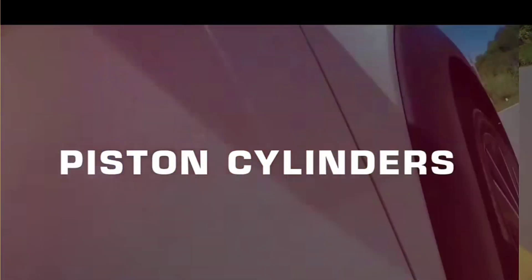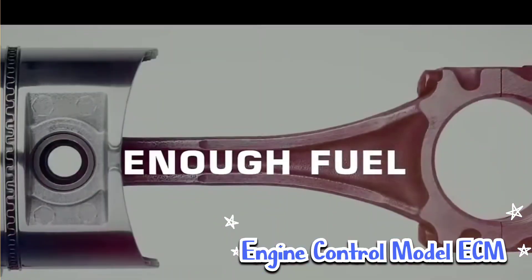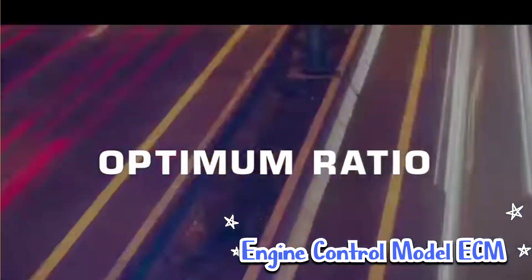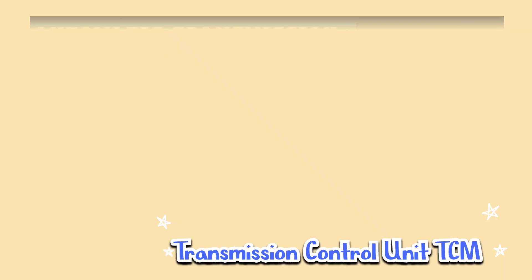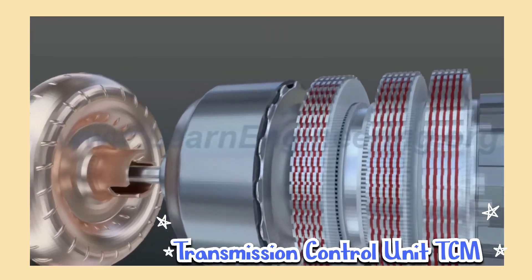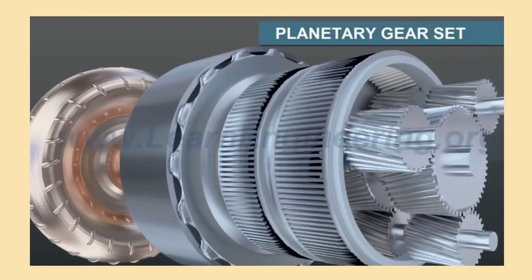Now, not all ECUs are the same. There are several types, each with specific roles. Engine control module (ECM): this is the main ECU focusing on engine performance. Transmission control unit (TCU): this one manages gear shifting for automatic transmissions.